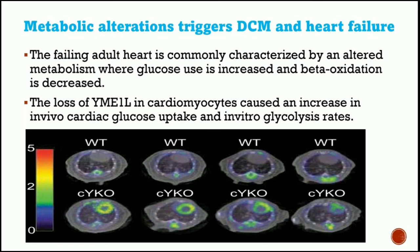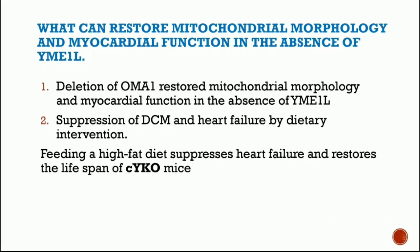This metabolic shift was demonstrated by PET scan, where YME1L knockout mice showed significantly increased glucose uptake in the heart. Reduced levels of cardiac acyl carnitines were also observed, indicating reduced beta-oxidation in YME1L-deficient cardiomyocytes. This illustrates the shift from fatty acid to glucose utilization — a typical sign of cardiomyopathy associated with mitochondrial dysfunction — as seen comparing wild-type versus cardiac YME1L knockout by PET scan.